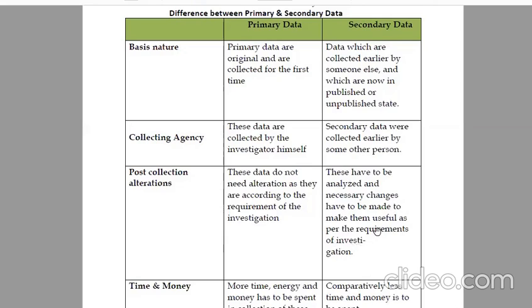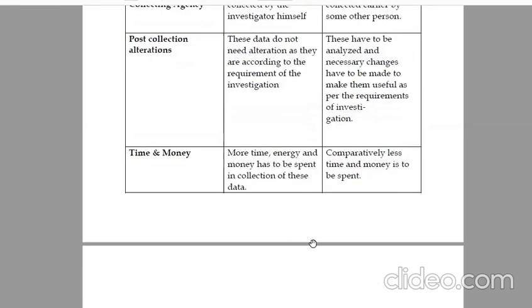Secondary data have to be analyzed and necessary changes made to make them useful as per the requirements of investigation. If you have information, you can use it directly. Otherwise, you will change two or three points. Time and money: more time, energy and money has to be spent in collection of primary data. Comparatively, less time and money is spent in secondary data.